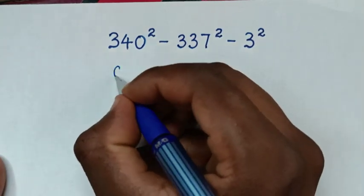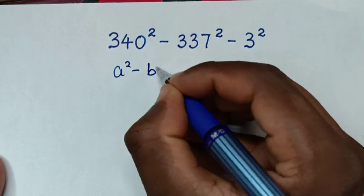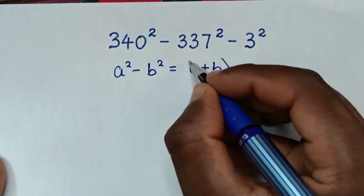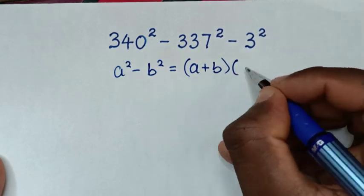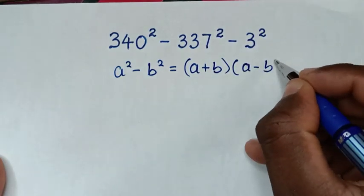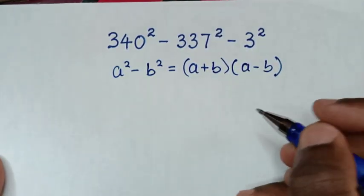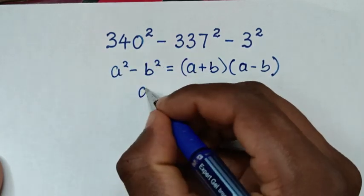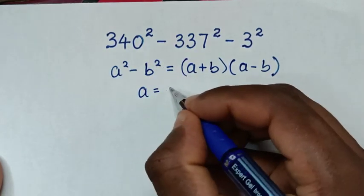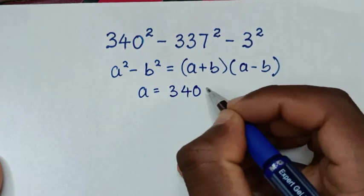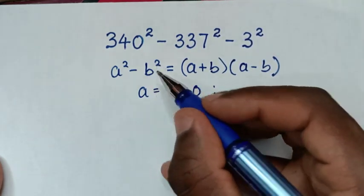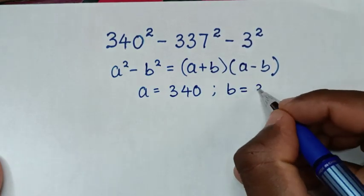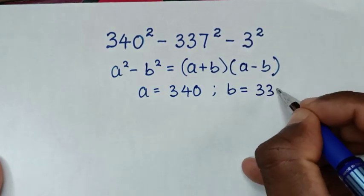The rule is: a² minus b² is equal to (a + b)(a - b). When we compare a² with 340², then a is equal to 340. And when we compare b² with 337², then b is equal to 337.